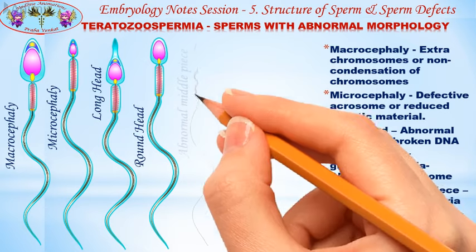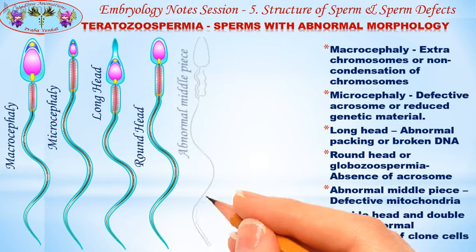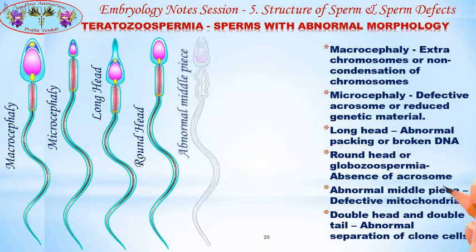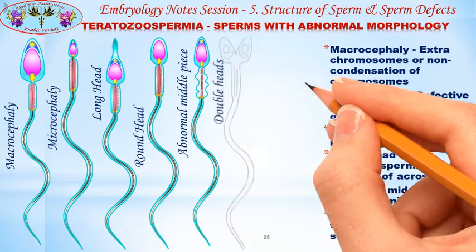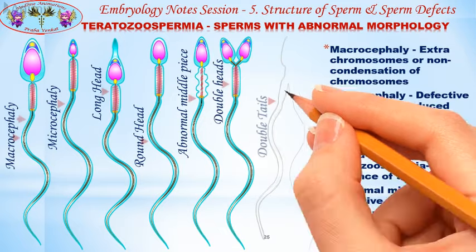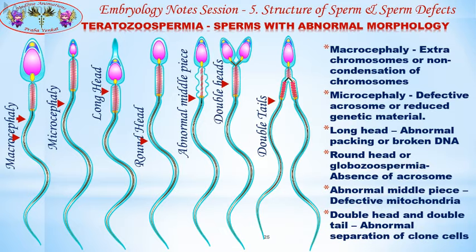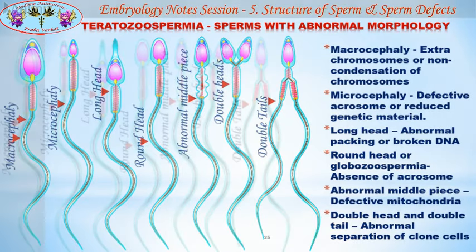The next defect is the sperm with an abnormal middle piece, caused by defective mitochondria. The last defect is double heads and double tails, which occurs because of abnormal separation of clone cells during spermatogenesis.